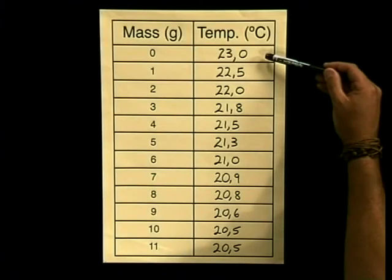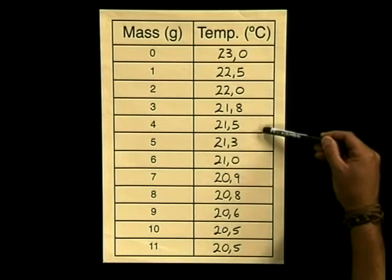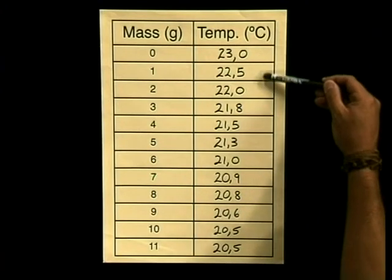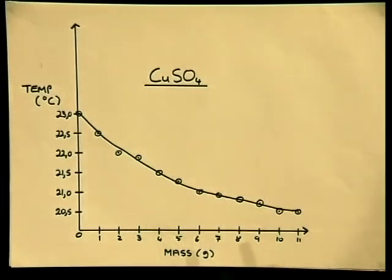The terms dilute solution, concentrated solution and saturated solution are all extremely important. Make sure that you understand what they mean. Now, let's try and analyze the results from our experiment. Can you see that the temperature has changed each time some solute was added to the solvent? An endothermic reaction is taking place since the temperature is decreasing. To get a better understanding of the relationship between mass of solute and temperature, I will now plot this data onto a graph. From this graph, we can see that there is a relationship between mass of solute dissolved and the temperature of the solution.